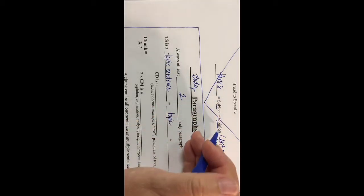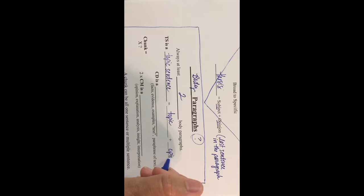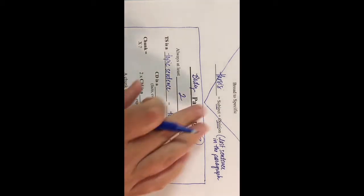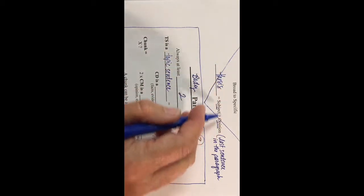It's almost like it has the genetics of its parents—the thesis, the subject and opinion, are the mom and dad. The babies are going to be your topic sentences, and remember, always two are born from that thesis. Two babies or more.